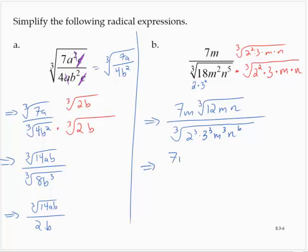So 7m cube root 12mn over 2 times 3 times m times n to the second.